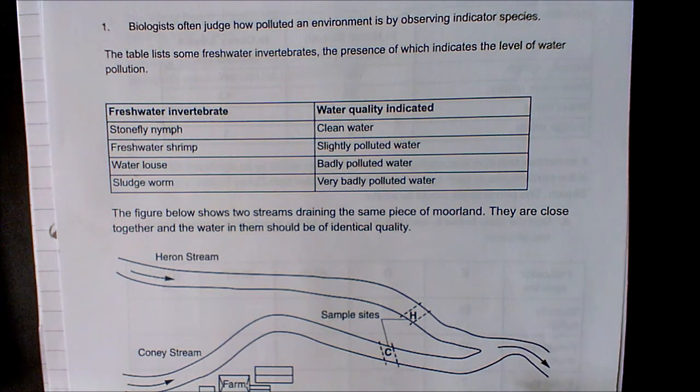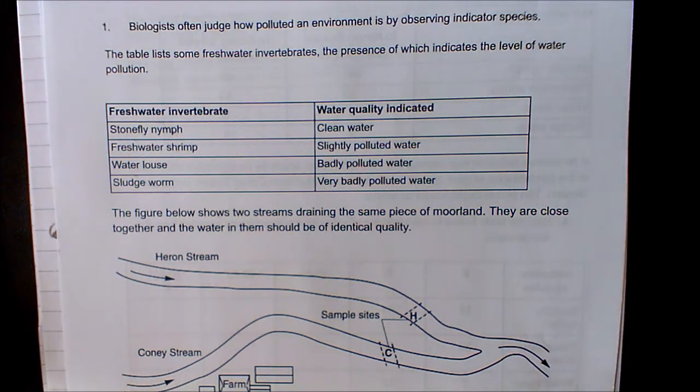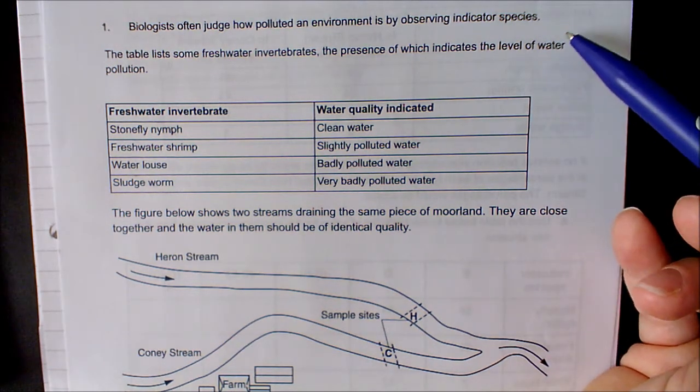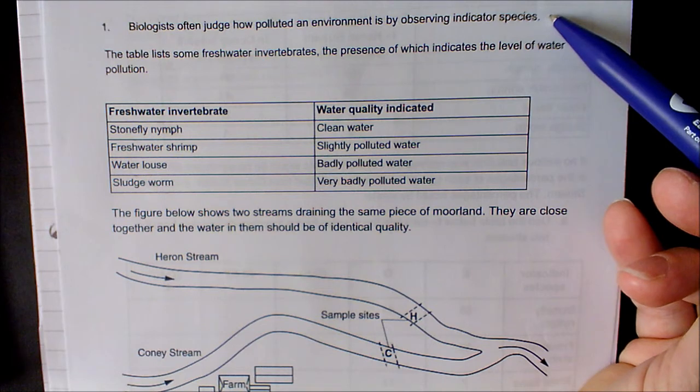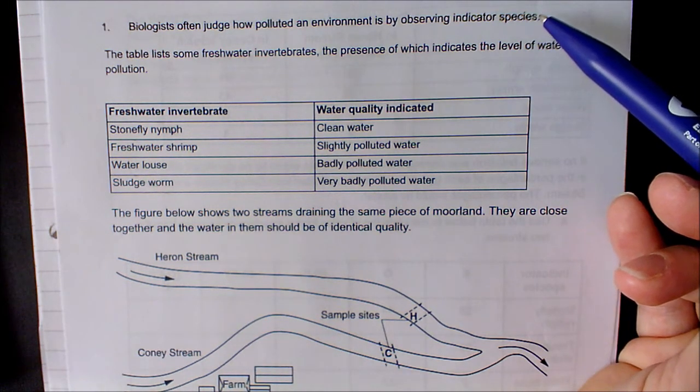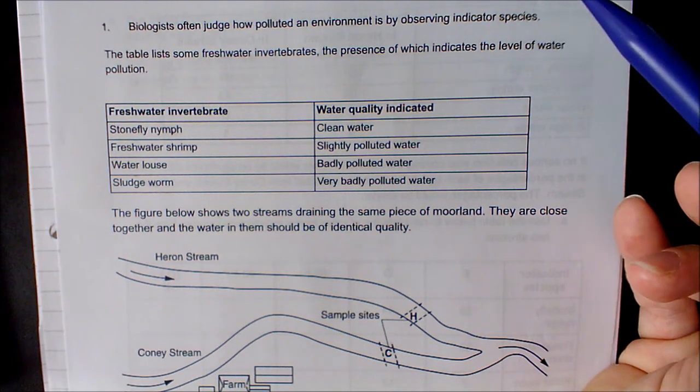Okay, so I'm going to take you through the chi-square question that I asked you to do at home. Question one says biologists often judge how polluted an environment is by observing indicator species. Indicator species will detect whether an area is polluted or not polluted, because some will prefer to live in polluted regions and others will prefer not to.